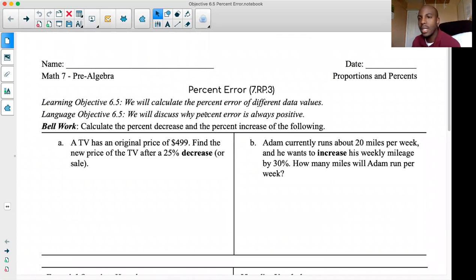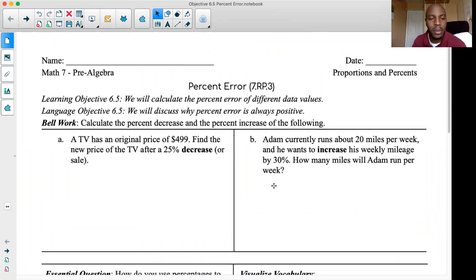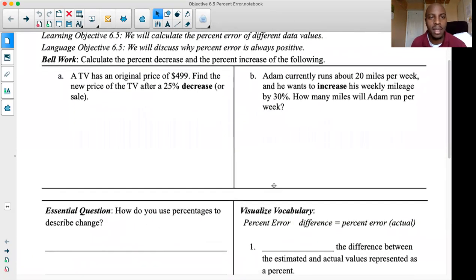We're talking about percent error today. As mentioned in the seventh grade Next Generation standards, we're going to talk about calculating percent error of different values and discuss what it is and why percent error is always positive. What I would like you to do to start today, as usual, I'd like you to start working on the bellwork. Please give yourself a couple minutes, pause the video, and try to work on the bellwork. Calculate the percent decrease and the percent increase of these two problems.